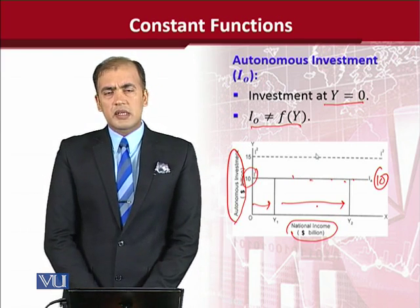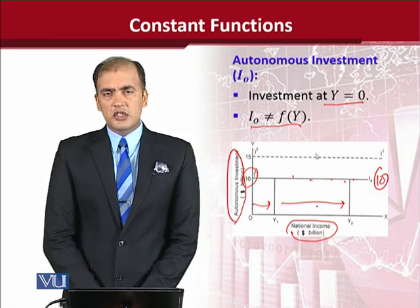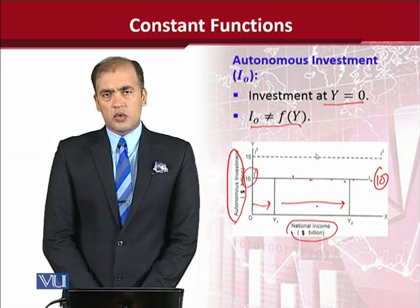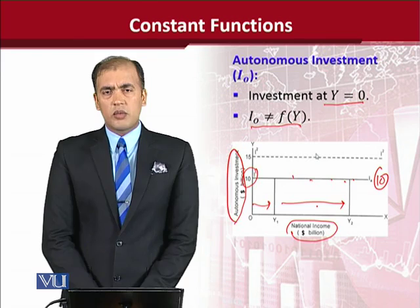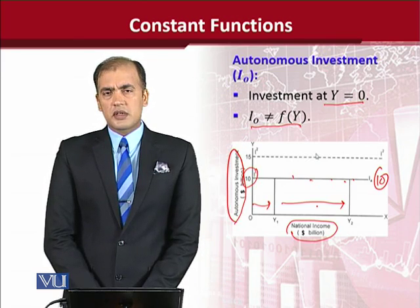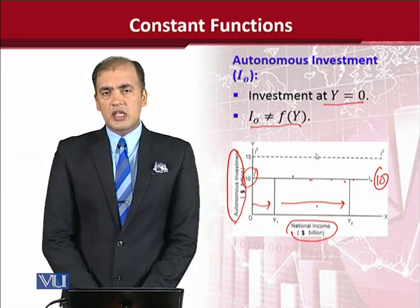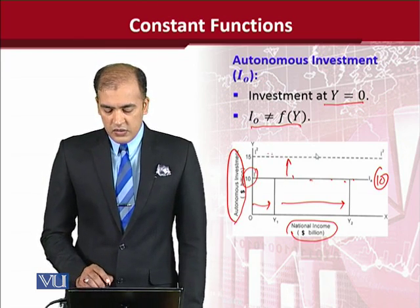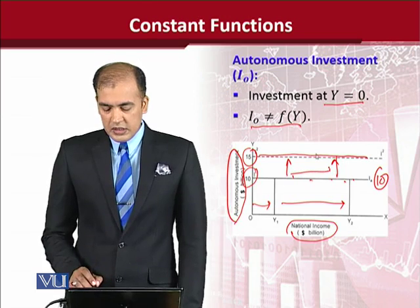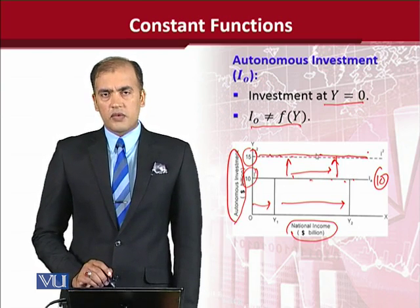However, autonomous investment is not permanently stuck at this level — it can increase, but definitely not due to changes in national income. There can be other encouraging factors that push investors to invest more, such as better socio-political conditions. What we are trying to show is that a constant function can shift to a higher or lower level depending on the stimuli bringing the change. When it shifts to I2, where investment is 15 units, it is again independent of the level of national income — its level is 15, regardless of national income. This is yet another example of a constant function in economics.